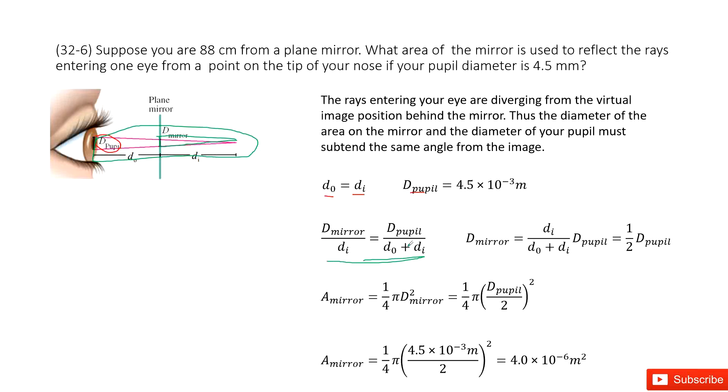Now in this similar triangle, we can convert this equation to get a function for D_mirror as d_i divided by d_o plus d_i times D_pupil. This term should be one-half because d_o equals d_i.